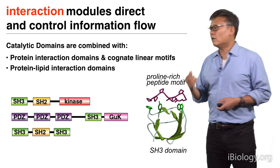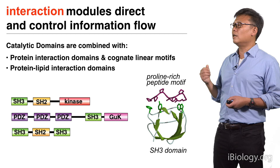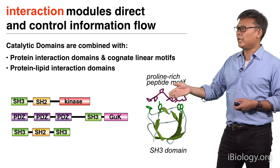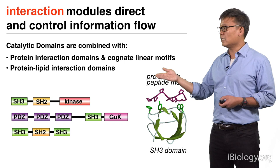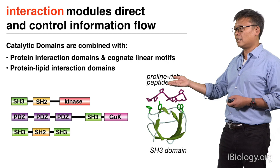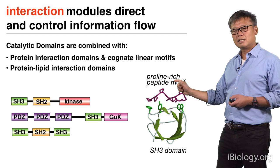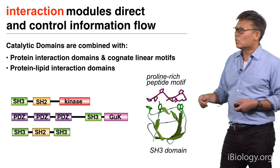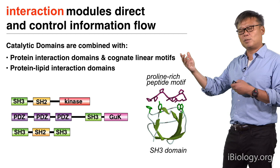The second important class of modules we see in signaling proteins are interaction modules that play a more crucial role in directing and controlling the flow of information. These catalytic domains are often combined with recognition domains — many of them are protein interaction domains, like the SH3 domain that recognizes a cognate linear peptide motif, in this case a proline-rich peptide. There are many other sorts of domains that recognize different distinct types of linear motifs. In addition, there are also recognition or interaction domains that bind to specific lipid species at the plasma membrane.